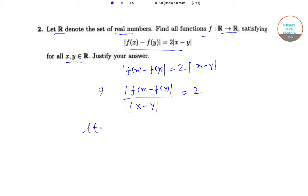Now, if we take limit x tends to y of |f(x) - f(y)| / (x - y), then this equals limit 2 as x tends to y.